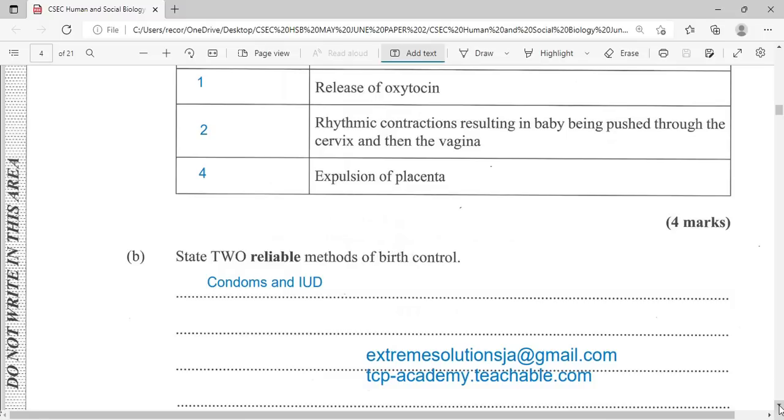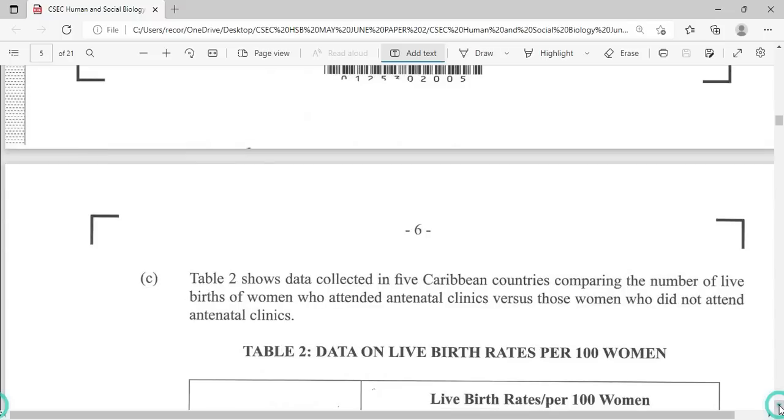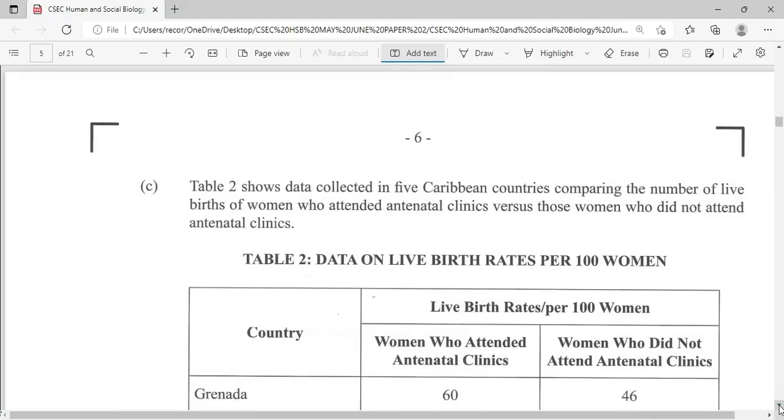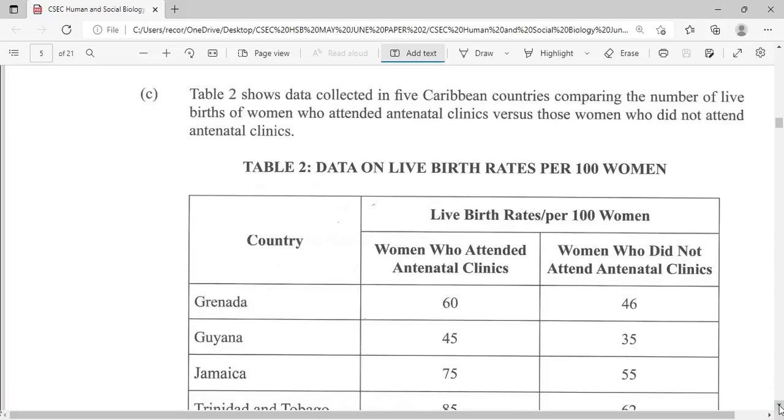We are supposed to take two reliable methods of birth control. We chose a condom and intrauterine devices. These are reliable methods of birth control and you could probably have something different but it will definitely work once it falls among the birth controls that are on your syllabus.